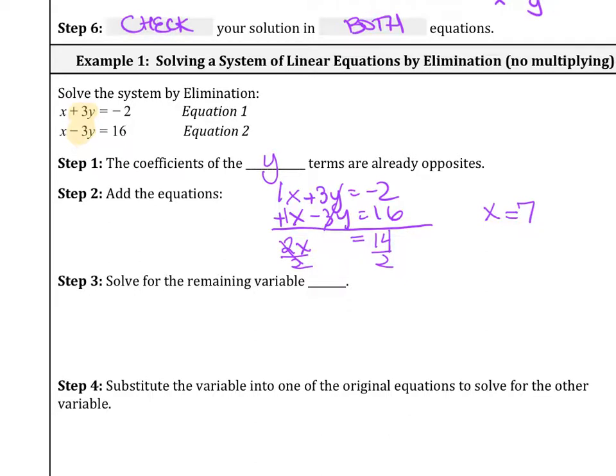We're going to solve for the remaining variable, so we need to solve for our y value. In order to do that, you substitute this x into one of the equations. It really doesn't matter which one you plug it into, you'll still get the same answer. So we plug in 7. Let's use equation 1. So 7 plus 3y equals negative 2. Let's solve for y, subtract 7 on both sides. We get 3y equals negative 9 divided by 3. We find that y equals negative 3.